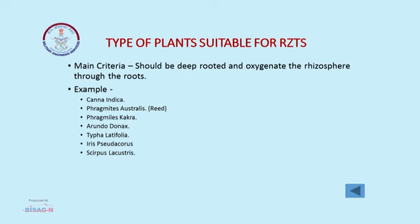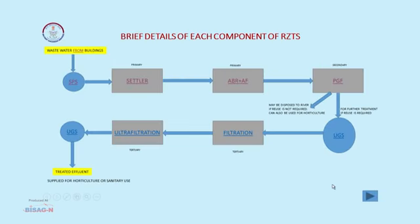These are the different types of plants suitable for root zone technology. Beyond this point, if we do not want to use the treated water for flushing, we can directly dispose of this sewage to any stream or underground, as the parameters are within the limits recommended by NGT. If we want to use it further for horticulture, fruit plants, or flushing purposes, three additional components can be used.